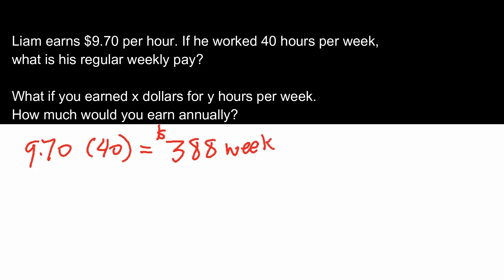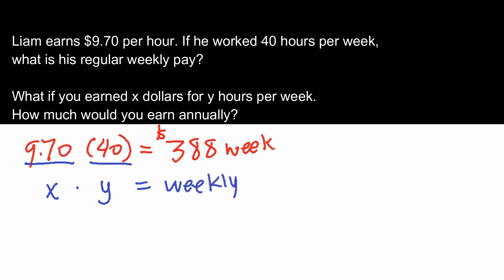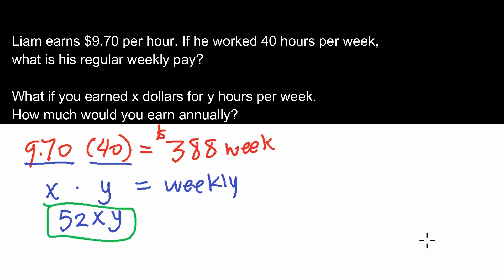The algebraic version: if you earn X dollars per hour for Y hours per week, how much would you earn in a year? X times Y gives us our weekly pay. Since there are 52 weeks in a year, we multiply 52 by XY, giving us 52XY as our algebraic expression for annual earnings.